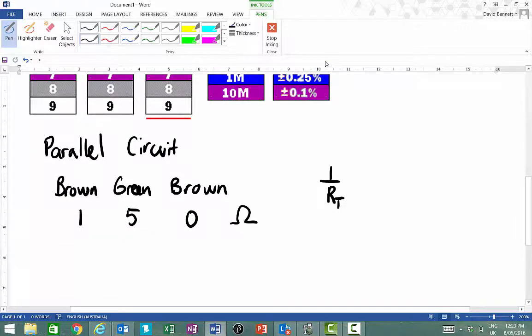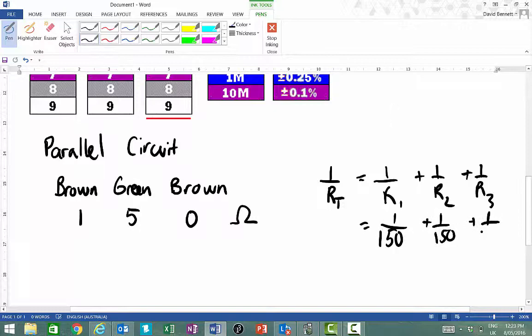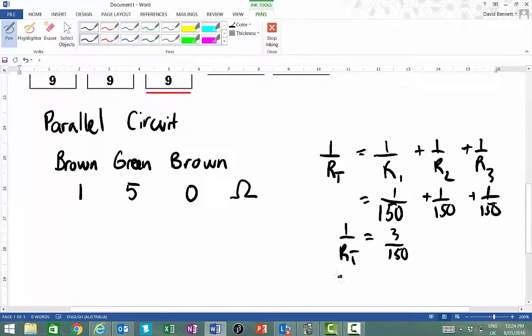Now to work out the resistance for a parallel circuit, I simply have 1 over R1 plus 1 over R2 plus 1 over R3. So therefore that's going to be 1 over 150 plus 1 over 150, which will give me 3 over 150. That's what 1 over RT is. So therefore RT is equal to 150 over 3, we just invert it, which is equal to 50 ohms.